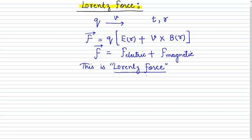The name Lorentz comes from the name of the scientist. Whenever you have to use the Lorentz force, simply write it as the sum of electric force and magnetic force: electric force is F equal to q into E, and magnetic force is F equal to q times v cross B. If you sum these two you will have a resultant force which is known as the Lorentz force.